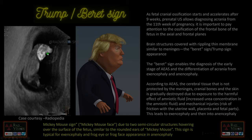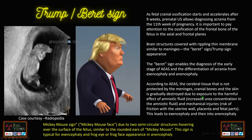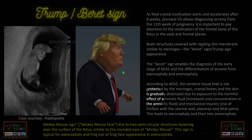Follow the case because it may turn into exencephaly and anencephaly. Normally the frontal bone protects the brain, but its absence exposes the brain to harmful effects of amniotic fluid — increased urea concentration and mechanical injuries — leading to exencephaly and later anencephaly. Remember the Mickey Mouse sign with semicircular structures hovering over the fetal surface, classical for exencephaly, and frog eye or frog face sign in anencephaly. Thick echogenic membranes with lack of ossification of the frontal bone at 11 weeks — suspect Trump or Barrett sign, classical for acrania.